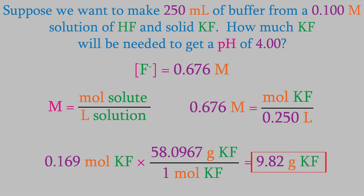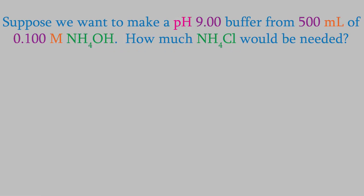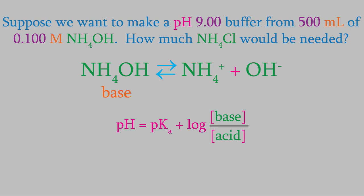So, the Henderson-Hasselbalch equation enables us to fairly quickly find out how much salt we'll need in order to make a buffer with a desired pH. We can also use it with buffers that are made of a weak base instead of a weak acid. For example, suppose we want to make a buffer with a pH of 9.00. We start with 500 milliliters of 0.100 molar ammonium hydroxide, and we'll add the salt, ammonium chloride, to make the buffer. How much ammonium chloride will we need? Once again, we'll use the Henderson-Hasselbalch equation. If you look at the chemical reaction, you can see that the base is ammonium hydroxide, and the conjugate acid is the ammonium ion.